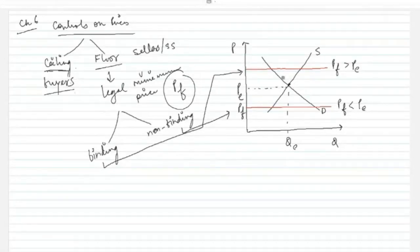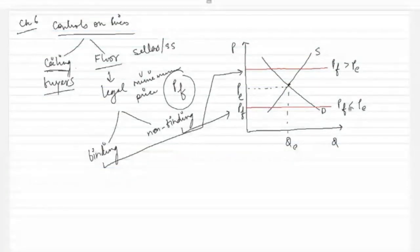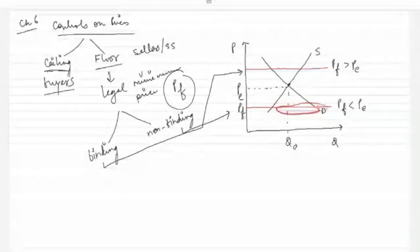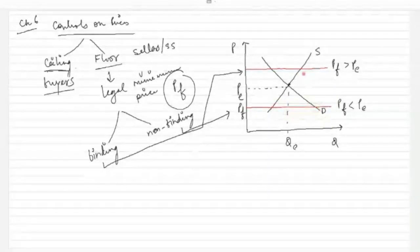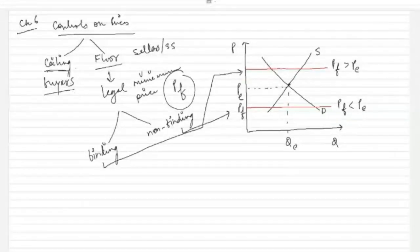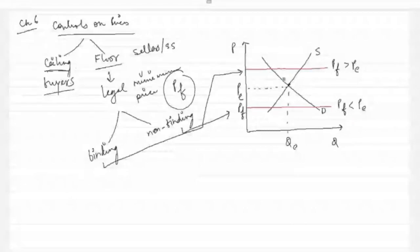The results here are opposite to those in price ceiling. In price ceiling, the binding case created excess demand — demand was more and supply was less. Here, in the binding price floor case, we will see the opposite. Price floor means minimum price and price ceiling means maximum price. Now let's look at what happens when price floor is binding.